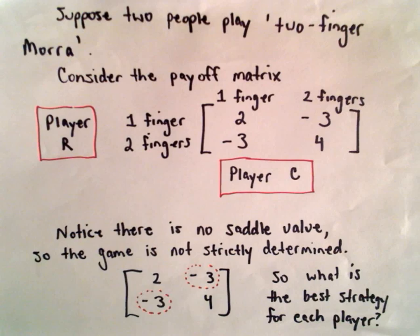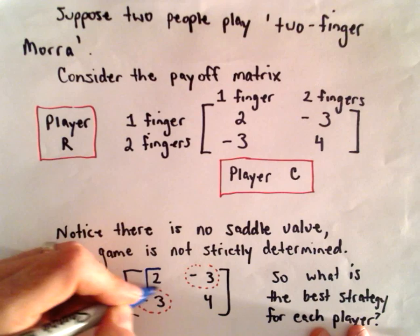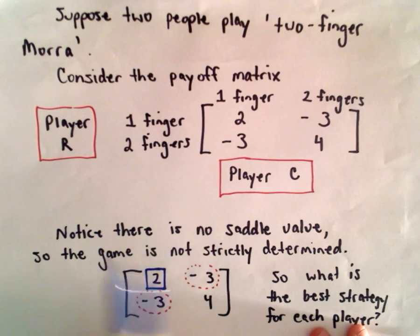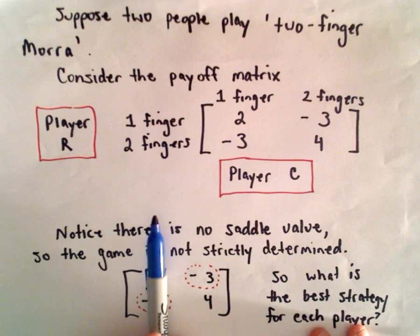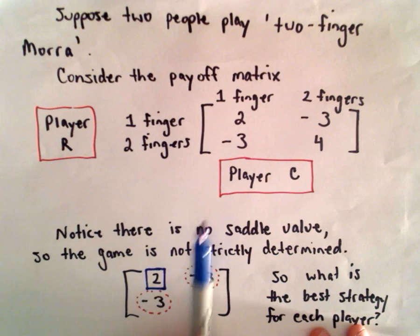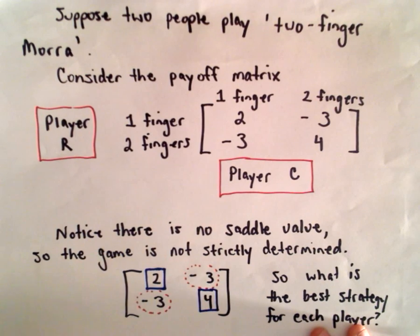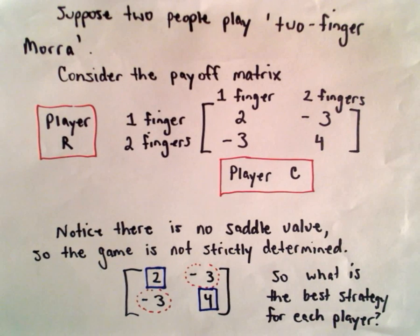Well, if you're the column player, in the first column, the worst thing that could happen would be you have to pay $2. And in the second column, the worst thing that could happen is you pay out $4. And since none of the entries is in both a circle and a square, that tells us that there's no saddle value. So this is a not strictly determined game.